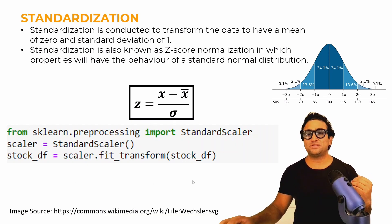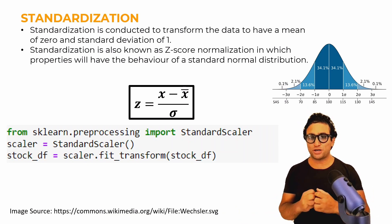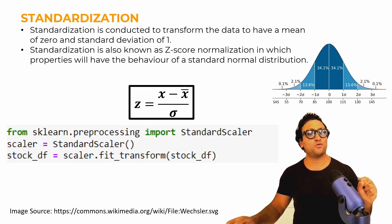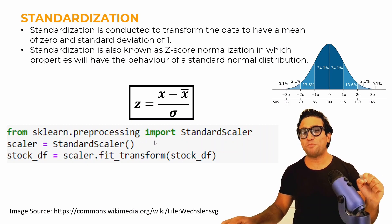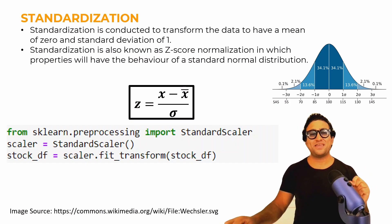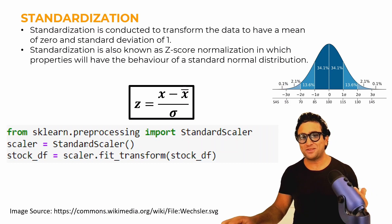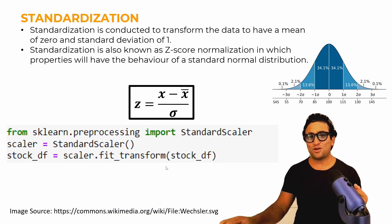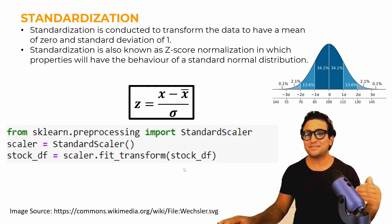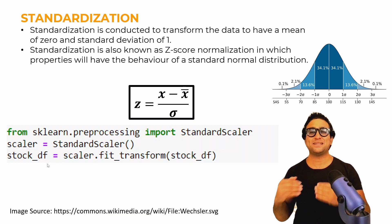Here's how to perform standardization in scikit-learn. From sklearn.preprocessing, import StandardScaler. Then instantiate an object: scaler = StandardScaler(). Apply the fit_transform method on the object, pass it the raw data to generate a brand new dataset — and that will be the standardized dataset.